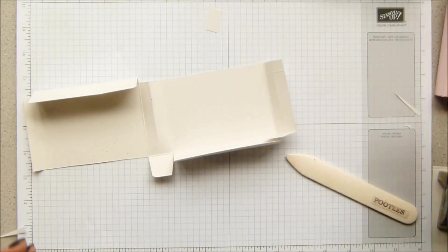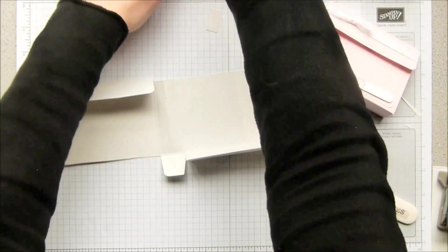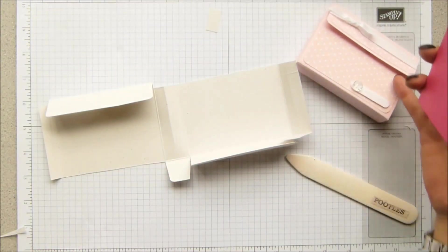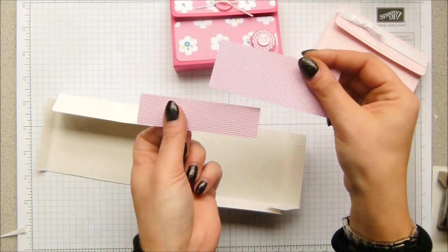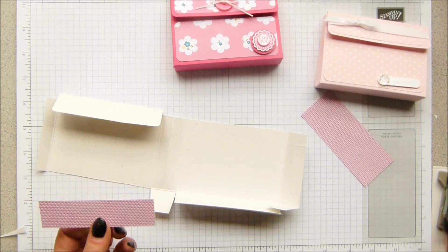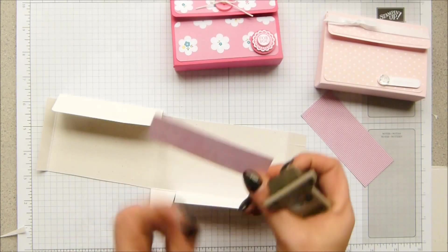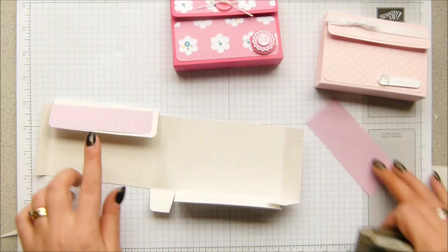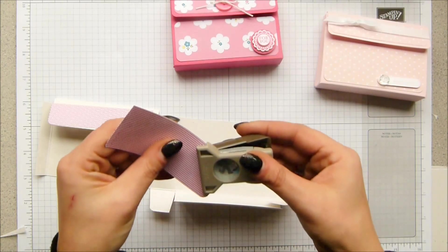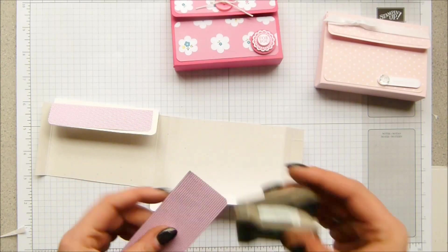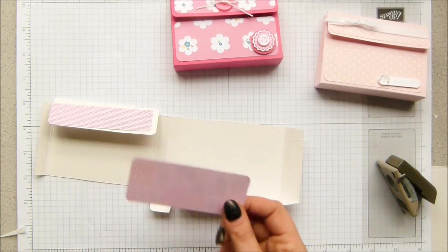For the designer series paper, this one's pink pirouette with matching DSP, and this one is melon mambo with gingham garden. I'm going to use the same gingham garden but this pattern. We've got two pieces: one that measures one inch by four inches—this is the one that's going to go on the lid, so you round off one corner. The other one is one and five eighths of an inch by four inches, and round all four of those corners. In metric, the top one is ten and a half centimeters by three centimeters, and the other one is ten and a half by three and a half centimeters.